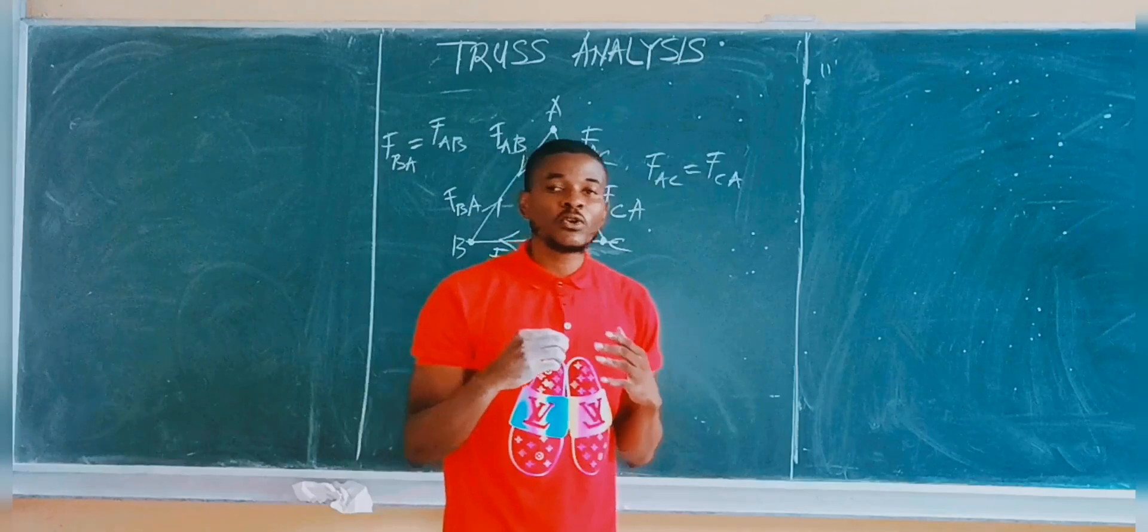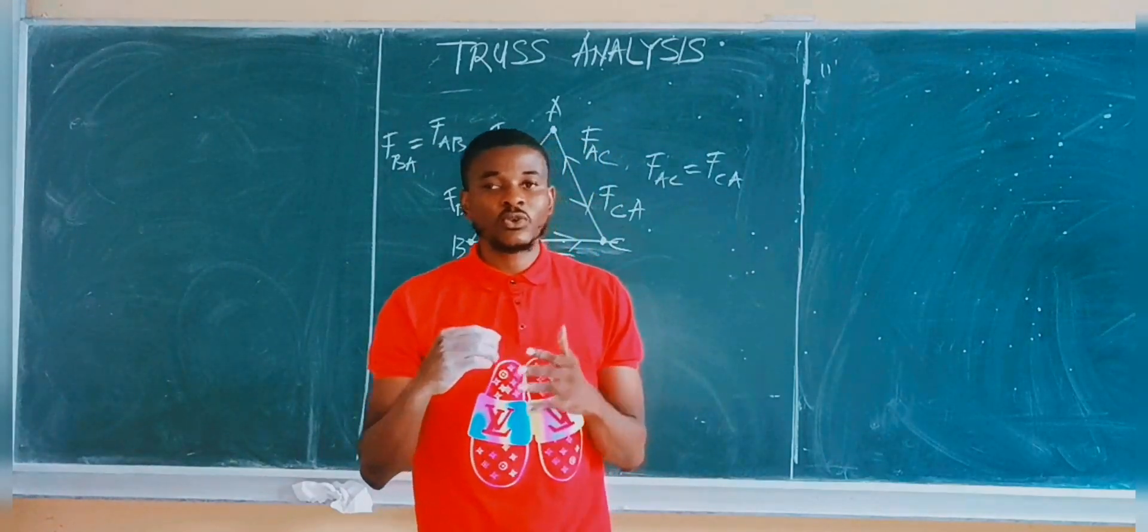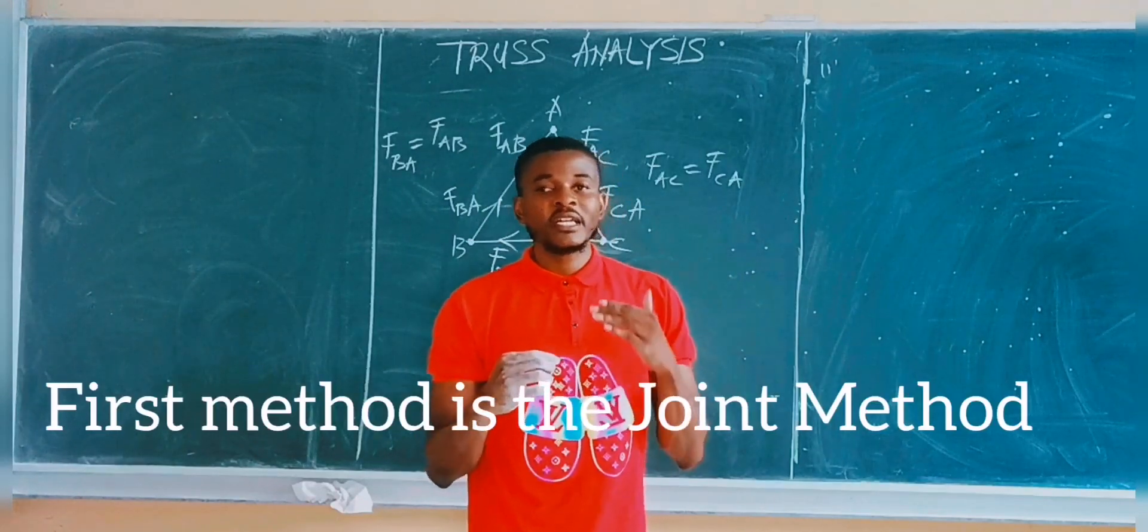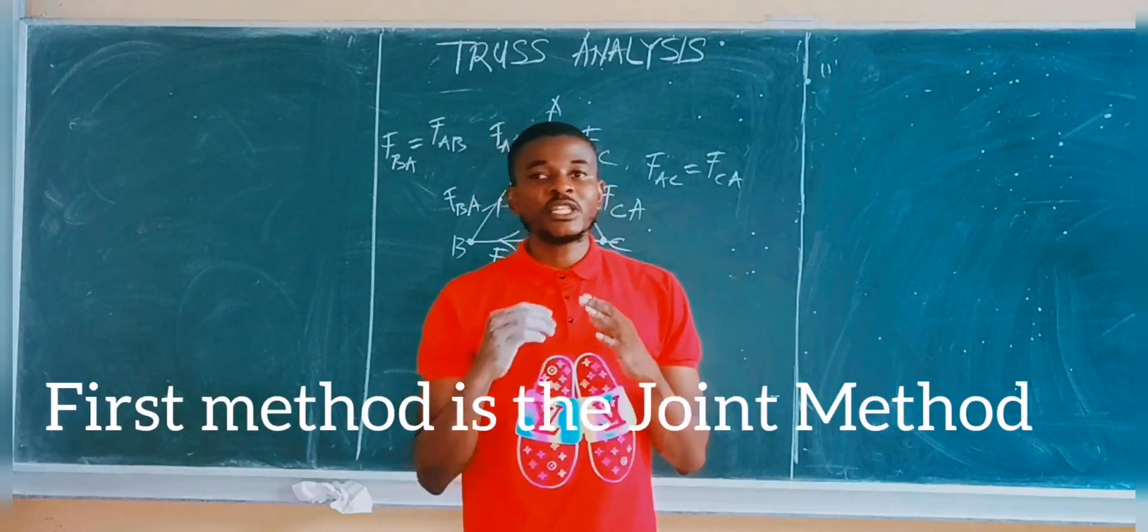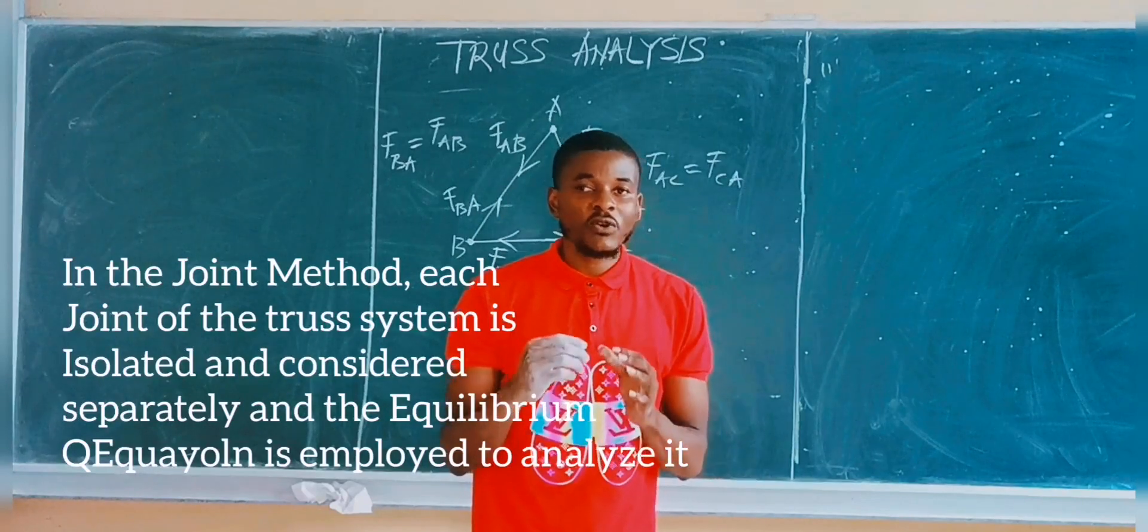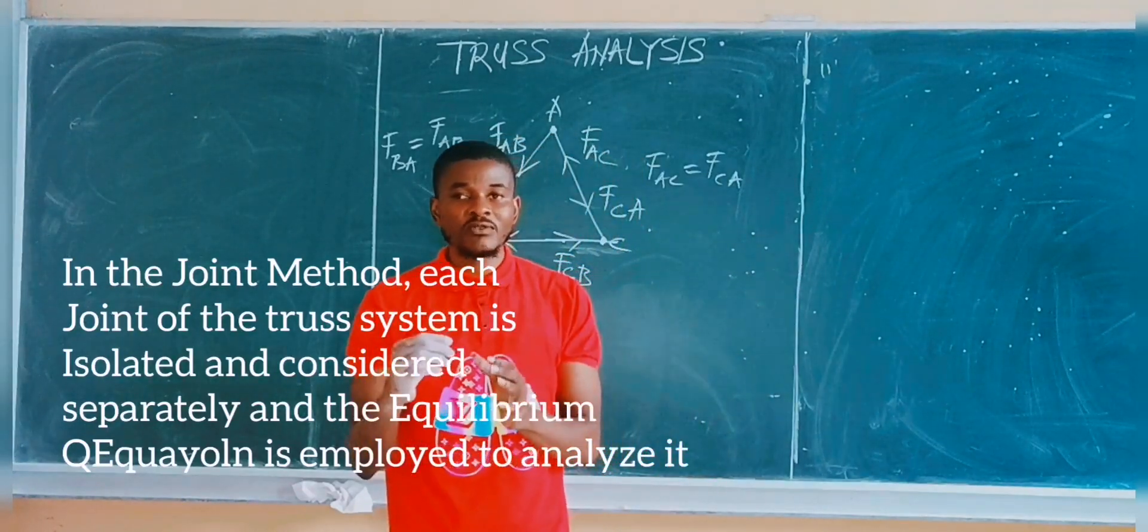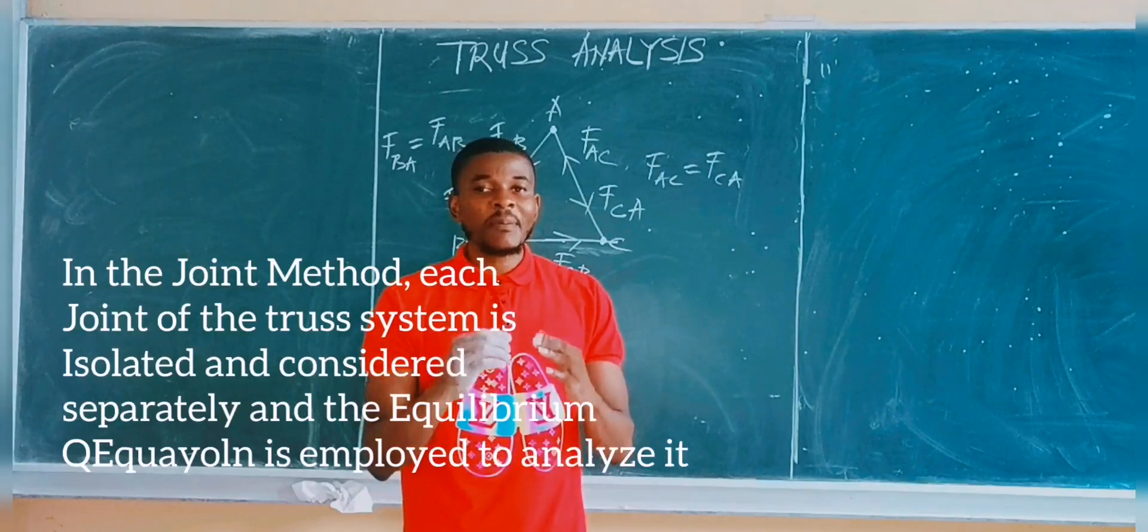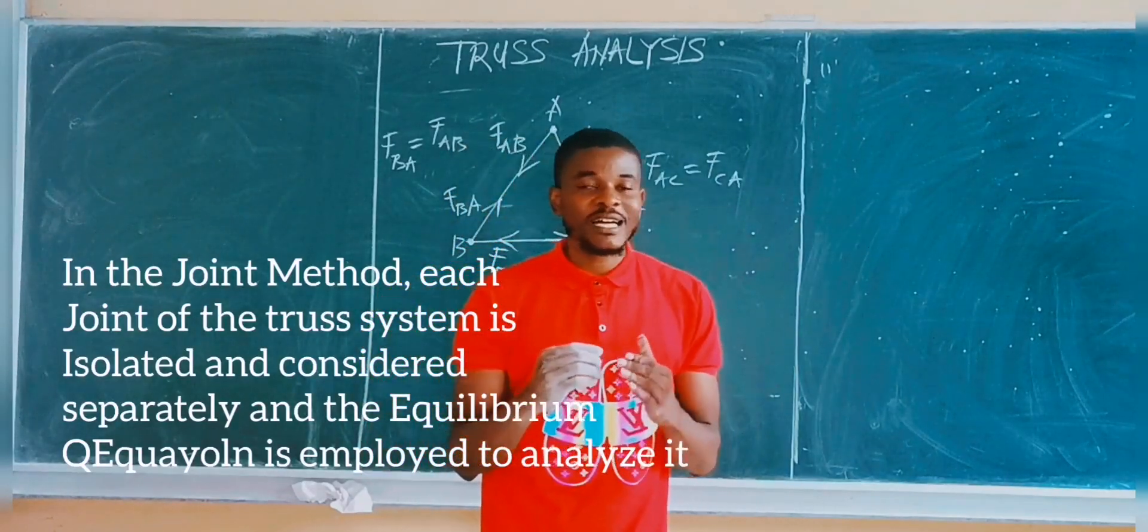Now there are two basic methods of analyzing truss systems. The first method is called the joint method. In the joint method, each of the joints of the truss system is picked out, considered or isolated, and then the equilibrium equation is applied to analyze them.